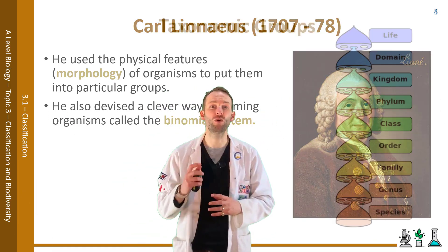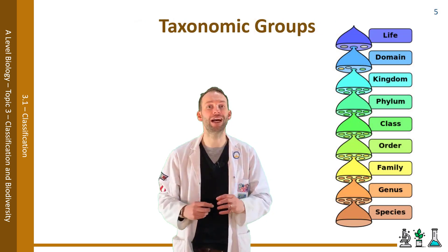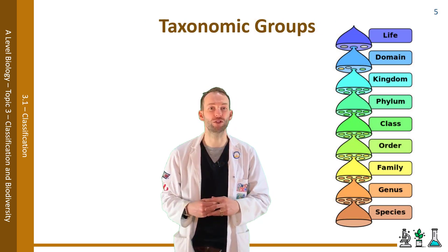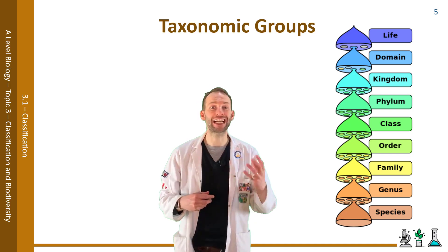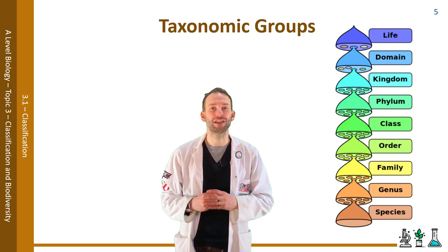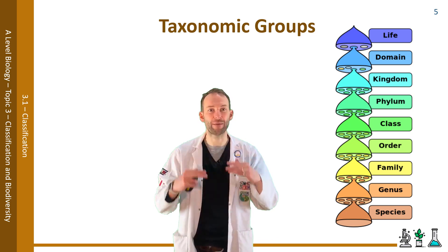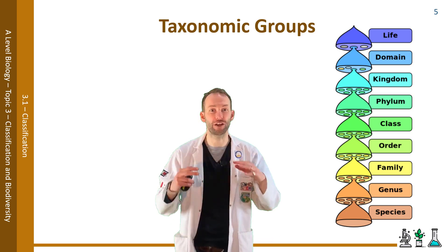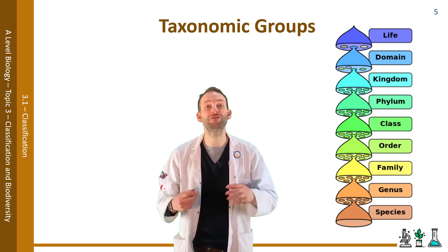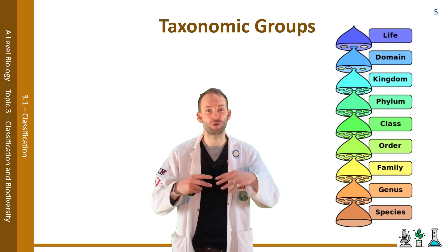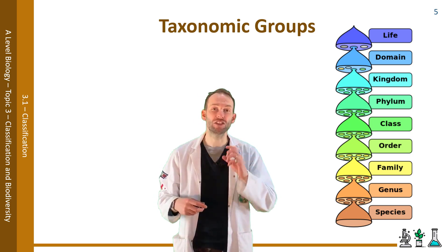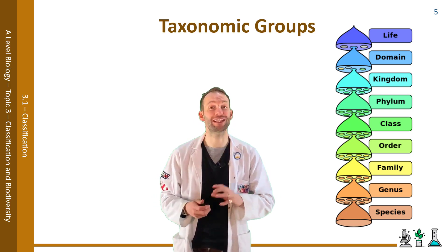Linnaeus took all of life and split it into smaller and smaller groups called taxonomic groups. For example, he noticed that animals and plants are different and so he put them into separate kingdoms. Then, within each group, he split them up into further phylums. For animals, he split them into vertebrates and invertebrates, for example, and so on into smaller groups until you reach the lowest form of classification, which is the individual species.